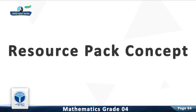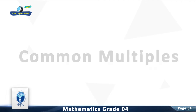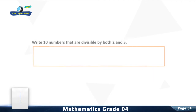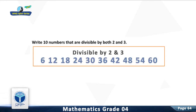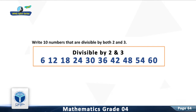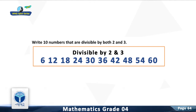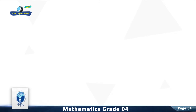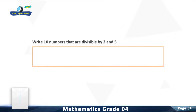Chapter 4: Factors and Multiples, Worksheet Number 18. Major Concept: Common Multiples. Resource Pack Concept: Common Multiples. Question 1: Write ten numbers that are divisible by both 2 and 3. Question 2: Write ten numbers that are divisible by 5 and 2.